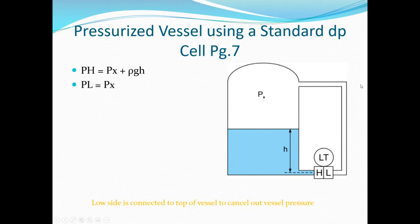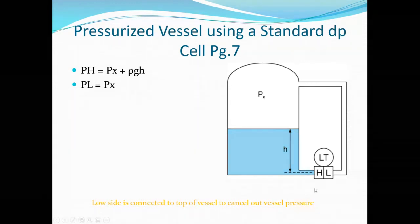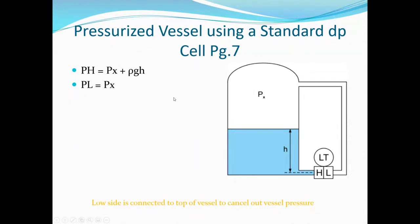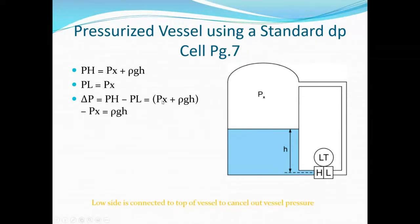Pressure on the high side is Px plus ρgh. Pressure on the low side is just the Px contribution. Differential pressure is high side minus low side: (Px + ρgh) − Px, giving us ρgh. To determine height, we take that differential pressure and divide it by ρ times g.